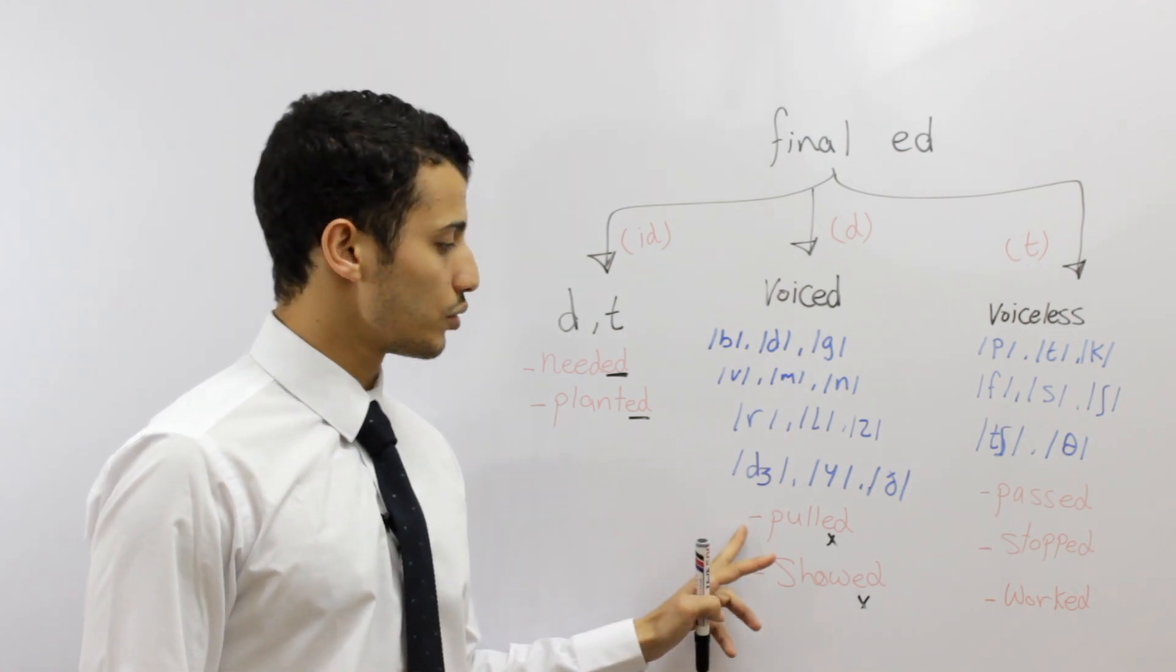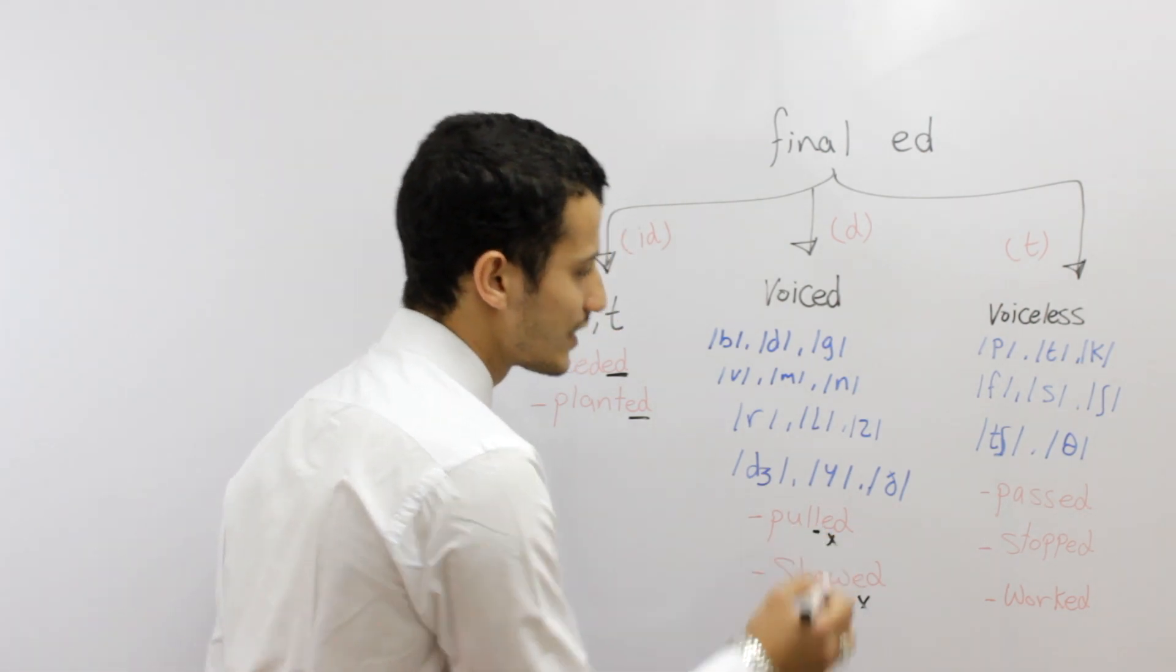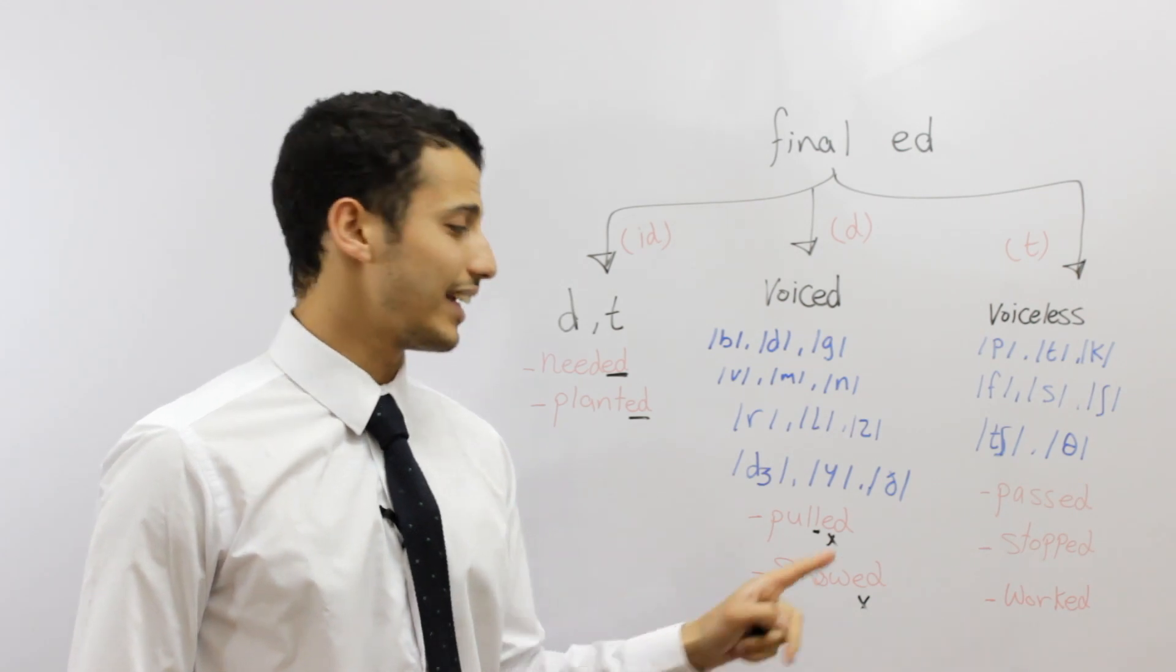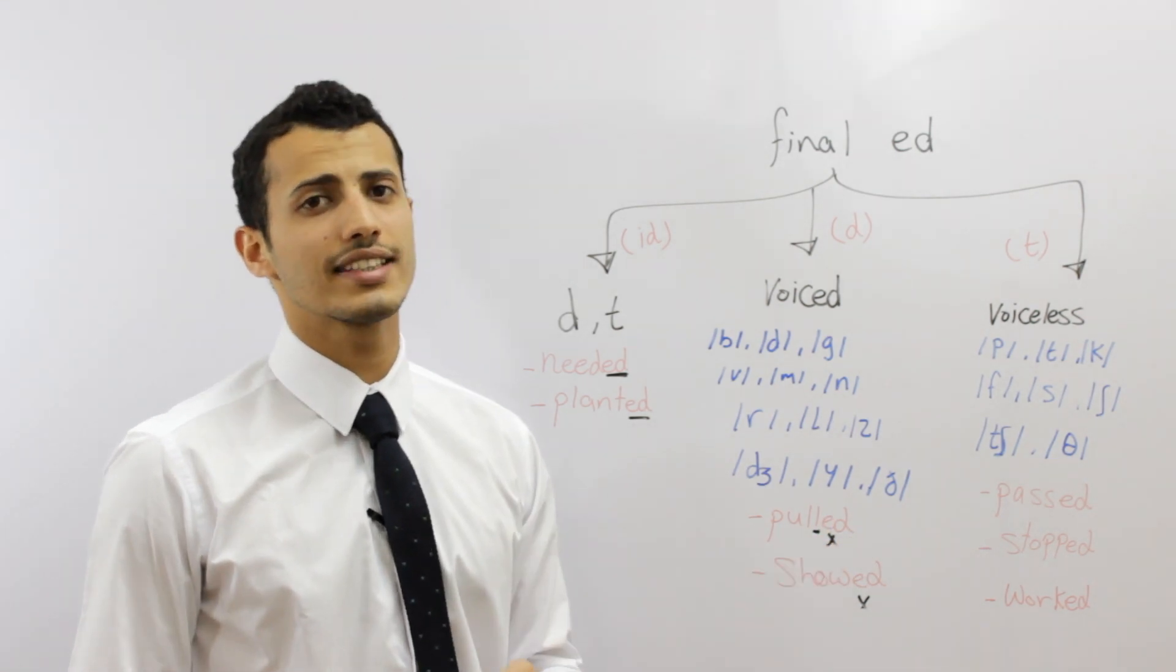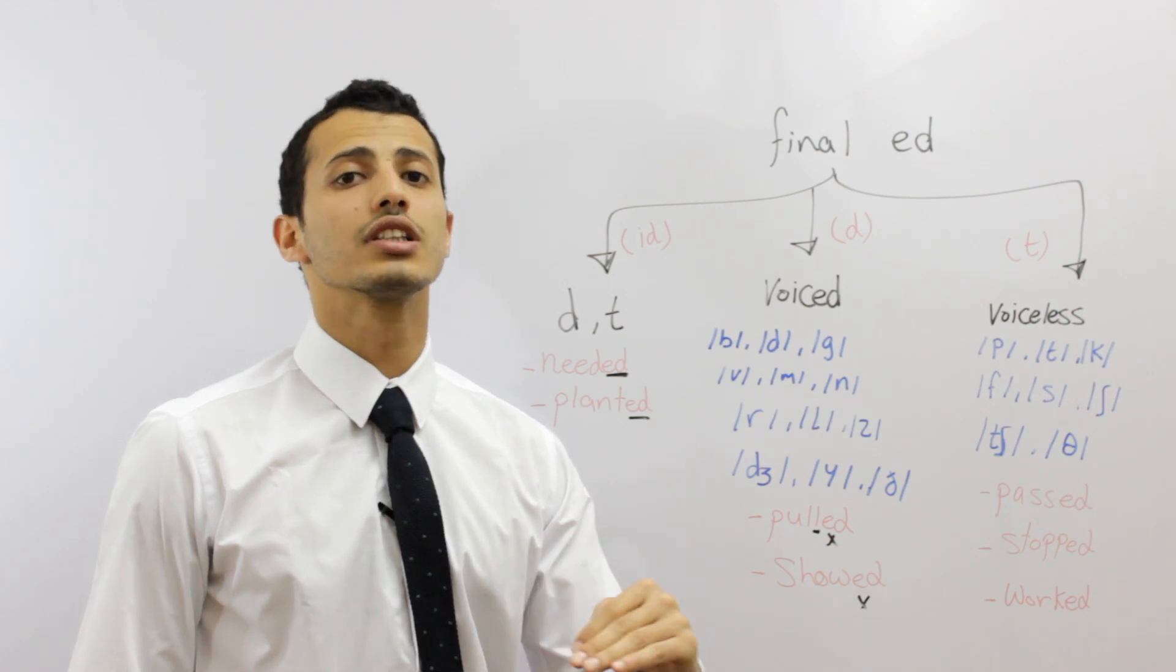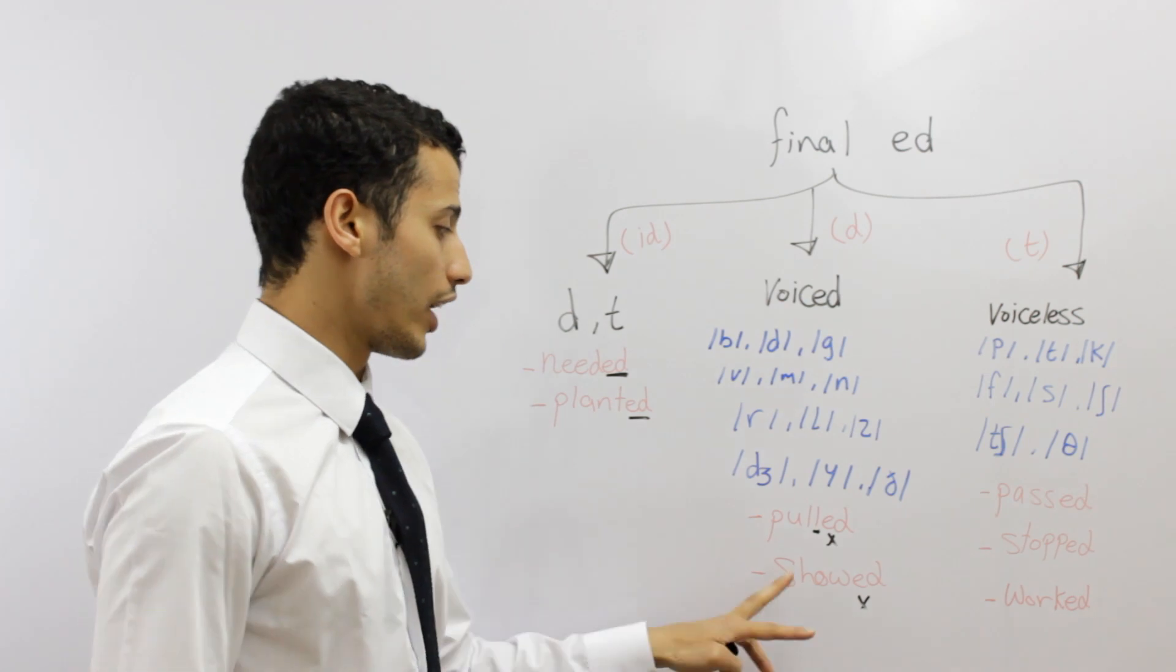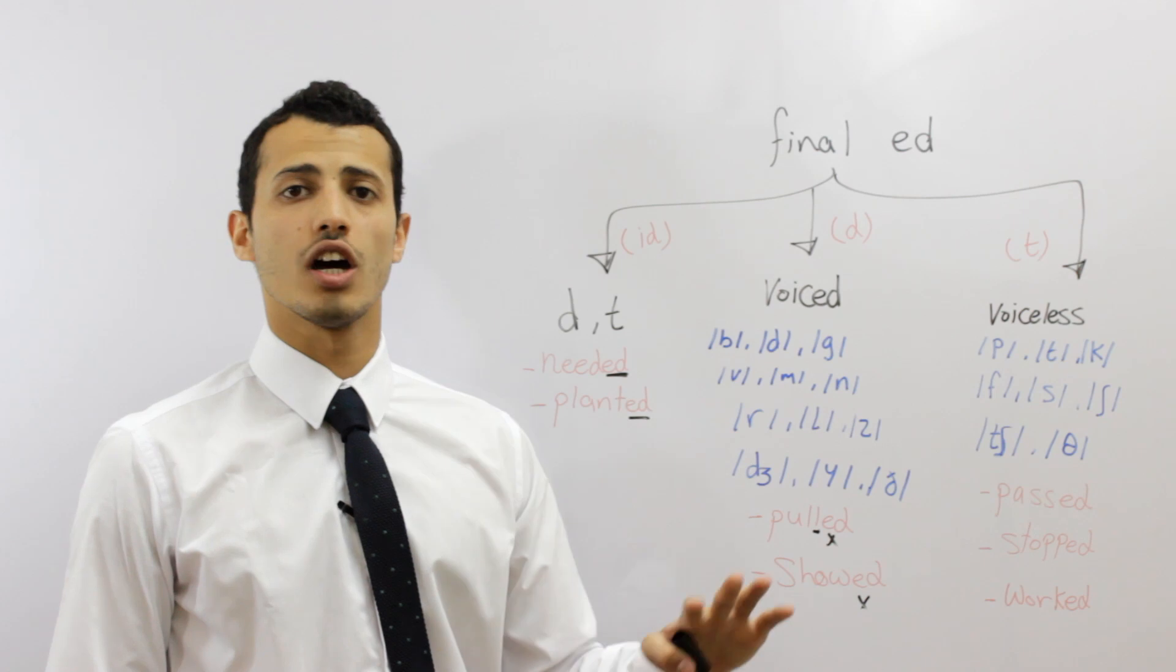Now try to say pulled, because of the L, the L guys is a voiced sound. We're going to pronounce the ED as D, the E is silent and the D is D, so we're going to say pulled, pulled, pulled, not pull-ed. Or, showed, showed, showed, not show-ed, no, showed.